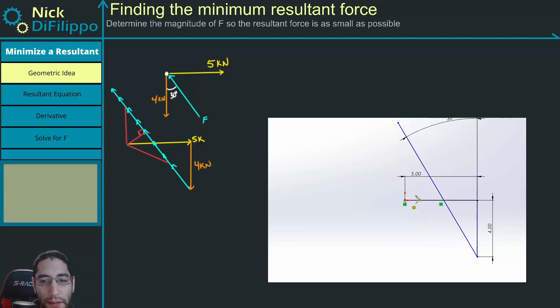So my resultant is what I'm drawing in now. We know this needs to be a perpendicular angle, and that is.